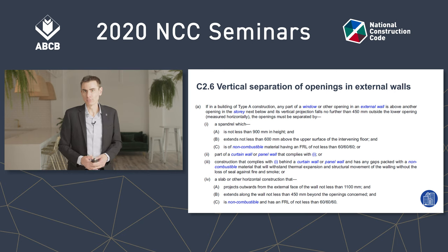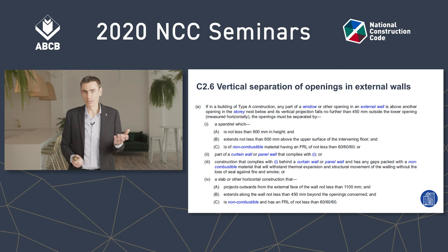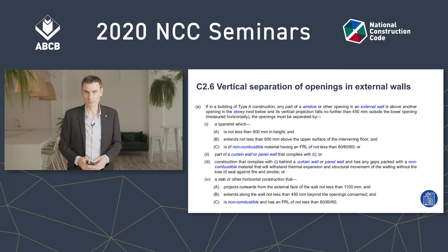I'll step you through each part of the provision right now. Sub-clause A — the first paragraph lead-in tells us we need to worry about separating openings when a window or other opening in the external wall is above another opening in the storey below, if its vertical projection falls within 450 millimetres of the lower opening.